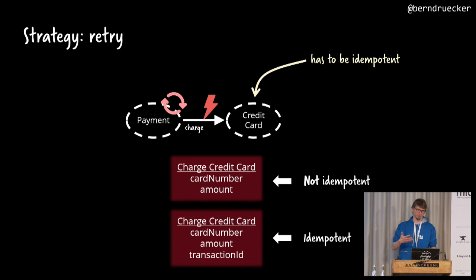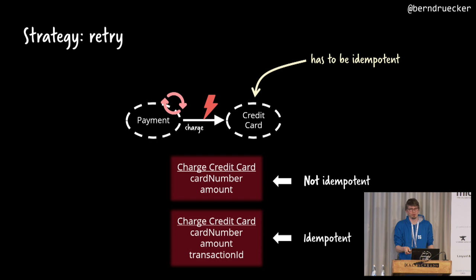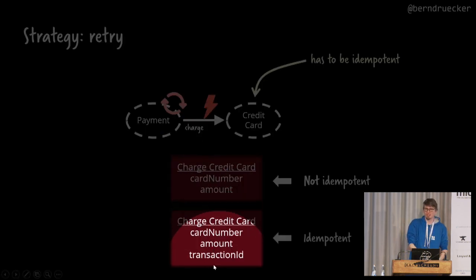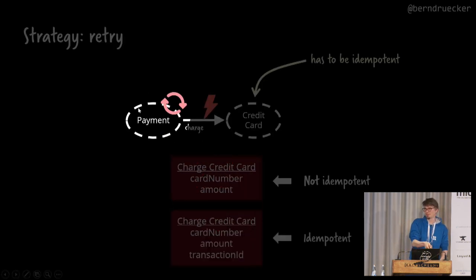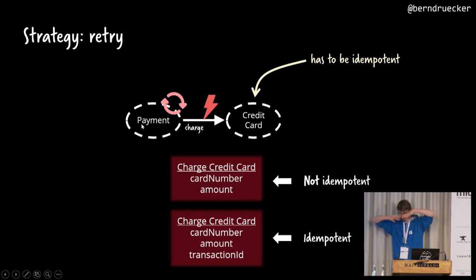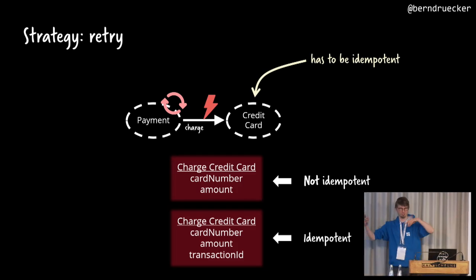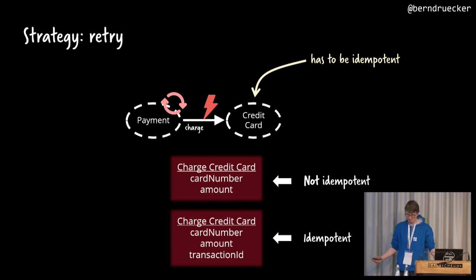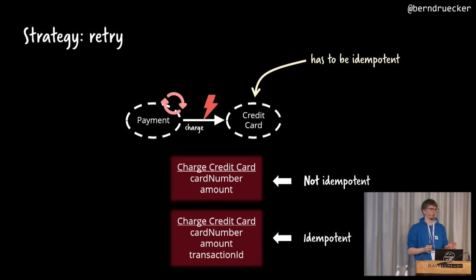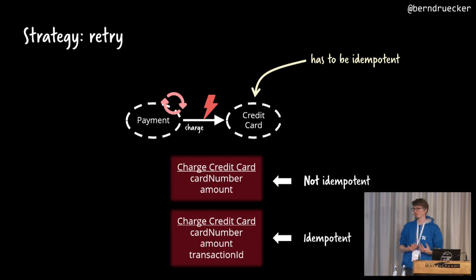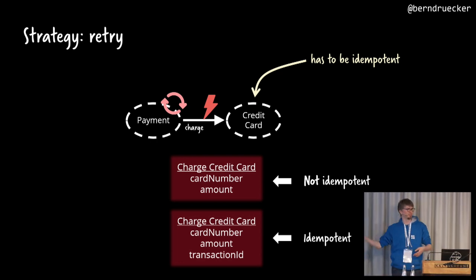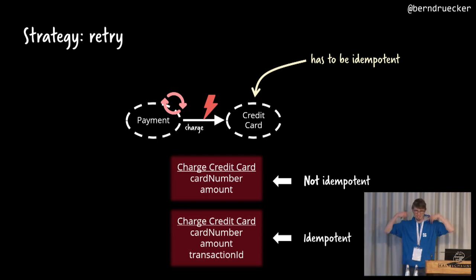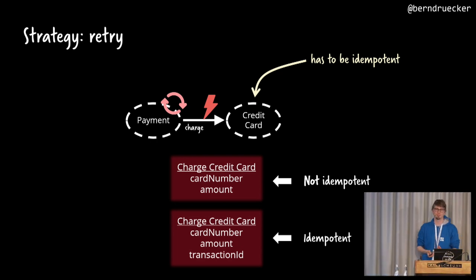If you're using messages instead of REST, there's no way around it — with messages you probably have built-in retries, so you should always think about having a retry. Making something idempotent can be very easy. You just add something to the interface — in our case, a transaction ID generated by the client. There's a big trend toward generating IDs as soon as possible. For example, you could generate an order ID already during checkout before you know if an order will ever exist, pass it around, and that makes idempotency much easier for everybody.